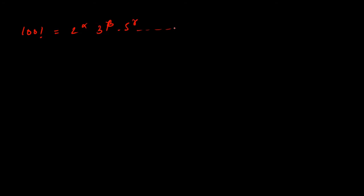100 factorial can be written as 2 raised to power alpha, times 3 raised to power beta, times 5 raised to power gamma, and so on. Now to calculate alpha, take 100 and divide it by 2, because we are calculating the power of this exponent, which is 2.